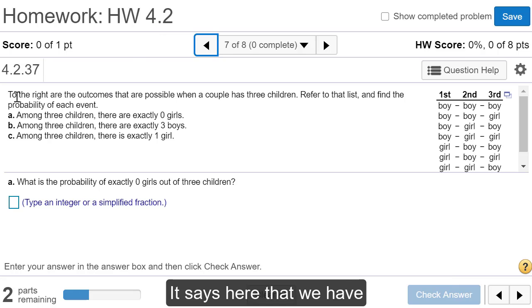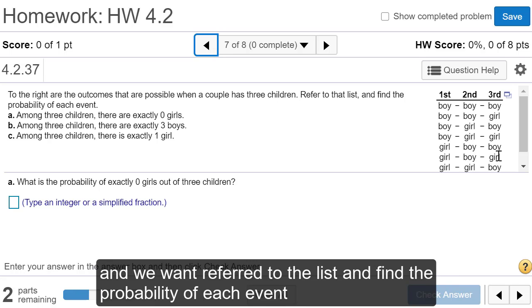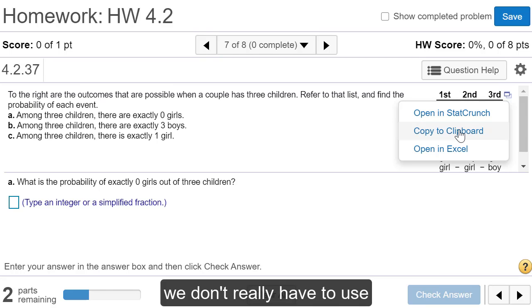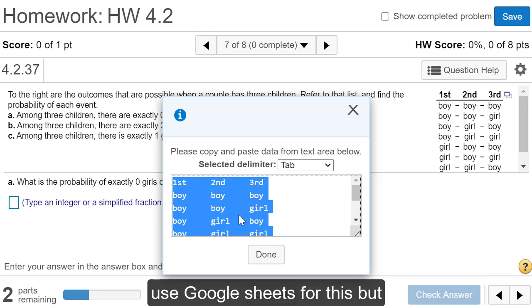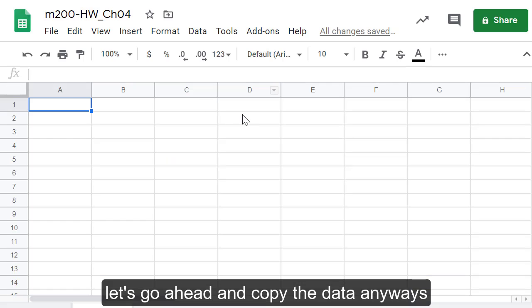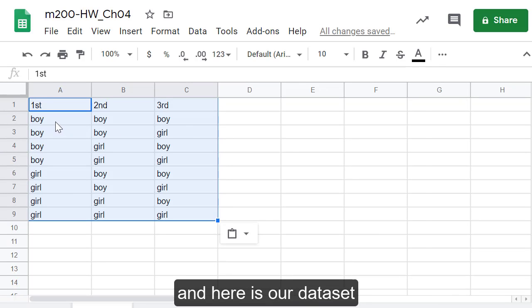It says here that we have the outcomes that are possible when a couple has three children and we want to refer to the list and find the probability of each event. We don't really have to use Google Sheets for this but let's go ahead and copy the data anyways. And here is our data set.